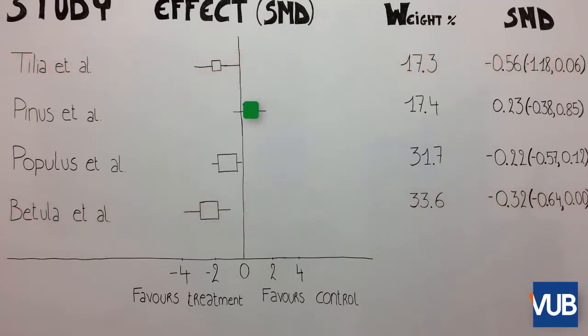If the effect is stated right from the vertical line, the effect is in favor of the control group. If it is on the left, the effects are in favor of the intervention group. The visual representation of weight, the effect and confidence intervals can also be presented in numbers, in a column on the right.